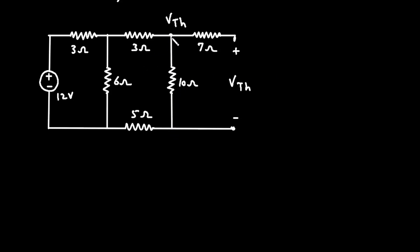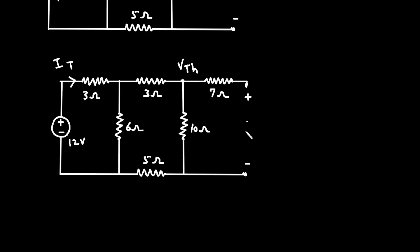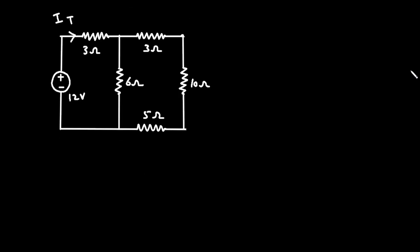To find this voltage VTH, it is the voltage across this 10 Ohm and this 5 Ohm, which are connected in series. First, we have to find the total current IT. We can see this 3 Ohm, 10 Ohm, and 5 Ohm are connected in series, so it will be 3 plus 10 plus 5 equals 18 Ohm.